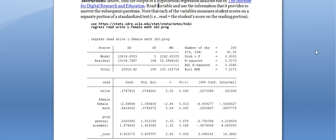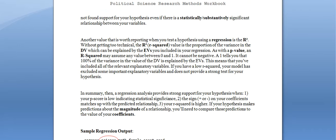You can ignore the F and prob greater than F values. The next important value is your R-squared, which tells you how strong the model is as a whole — does it do a good job of explaining the value of the dependent variable? The R-squared tells you what proportion of the variance in the dependent variable is explained by the included explanatory variables. Like a p-value, it's a proportion measured from 0 to 1 and cannot be negative. It doesn't make sense to say you explain negative variance, but it does make sense to say you explain 50% of it.